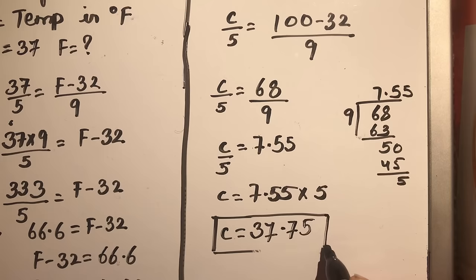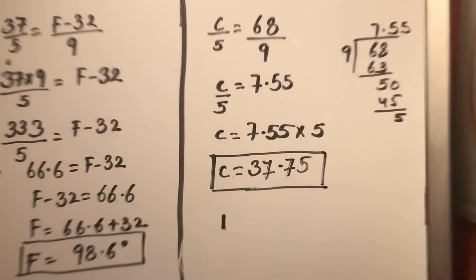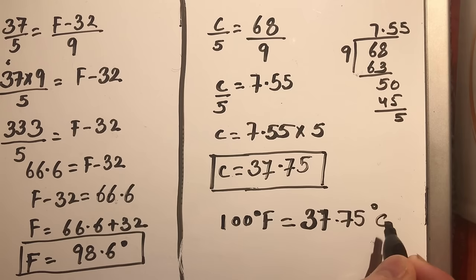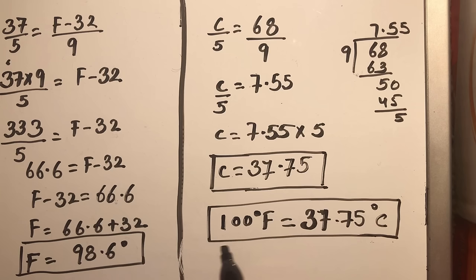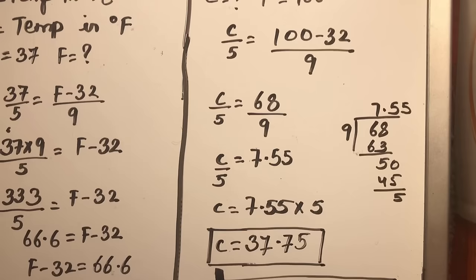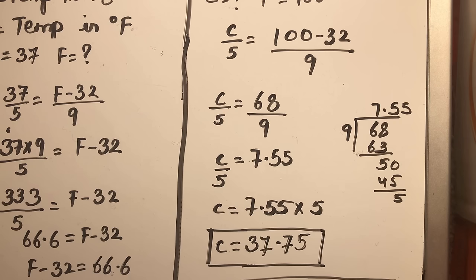So 100 degrees Fahrenheit is equal to 37.75 degrees centigrade. This is how, using the relation C over 5 equals F minus 32 over 9, we can convert Celsius temperature to Fahrenheit and Fahrenheit temperature to Celsius or centigrade. Thanks for watching.